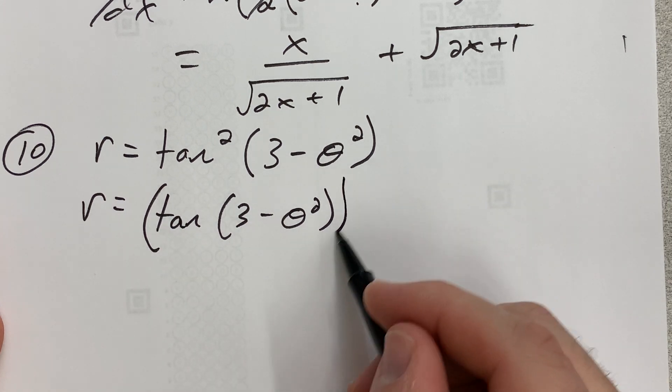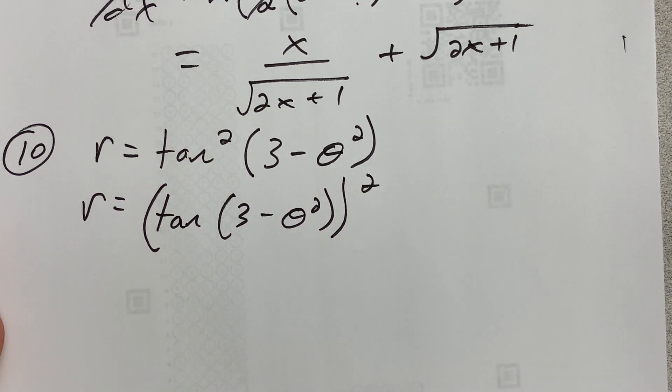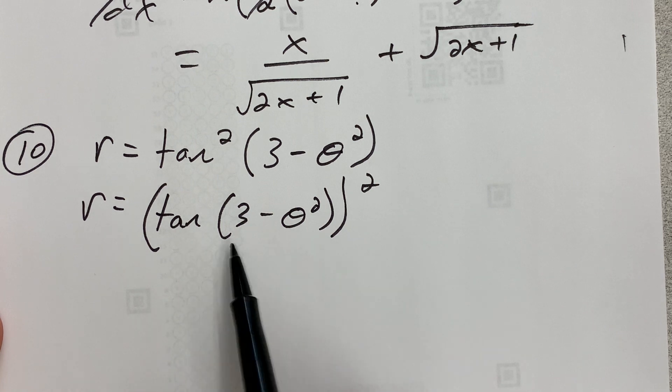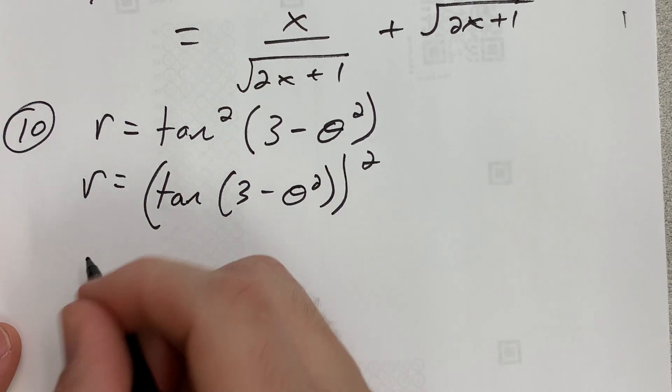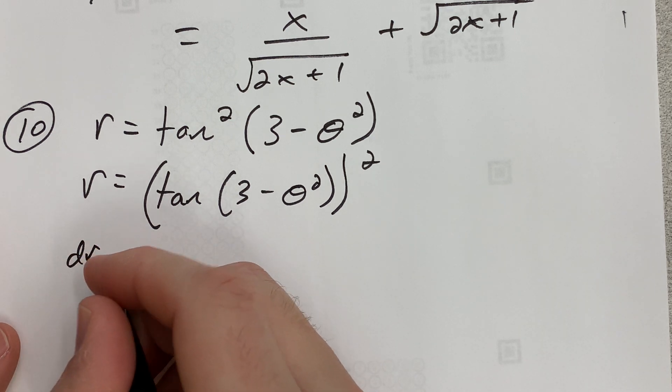So that I can get around this tan squared—that's literally what it means, right? Then I'm gonna take the derivative, so two out in front. So the derivative of r with respect to theta...